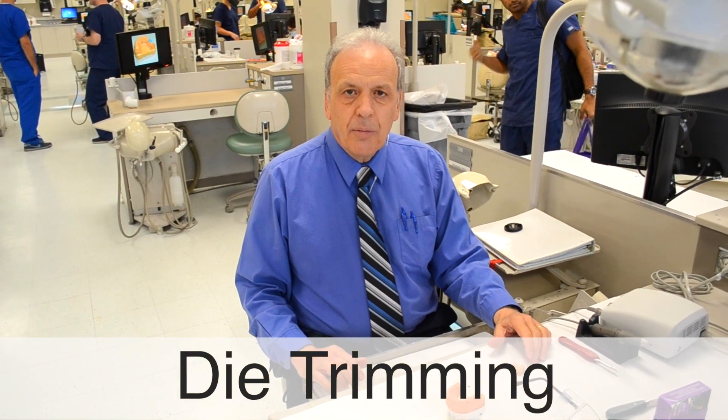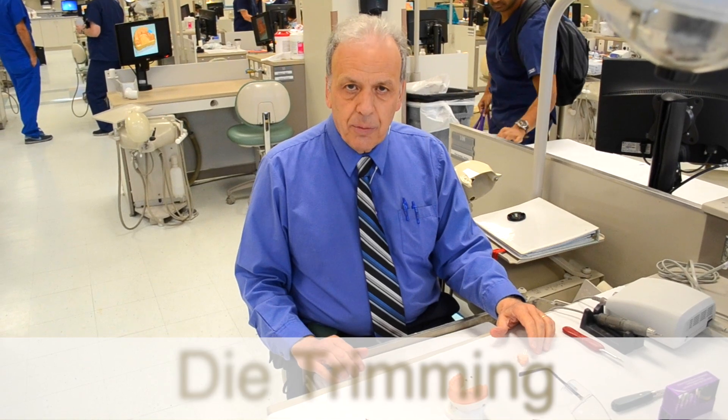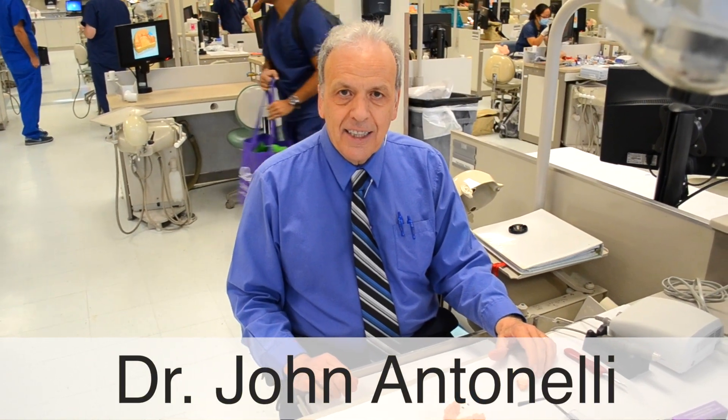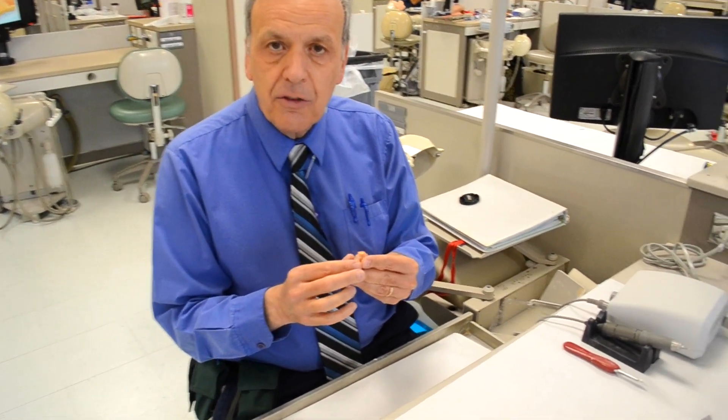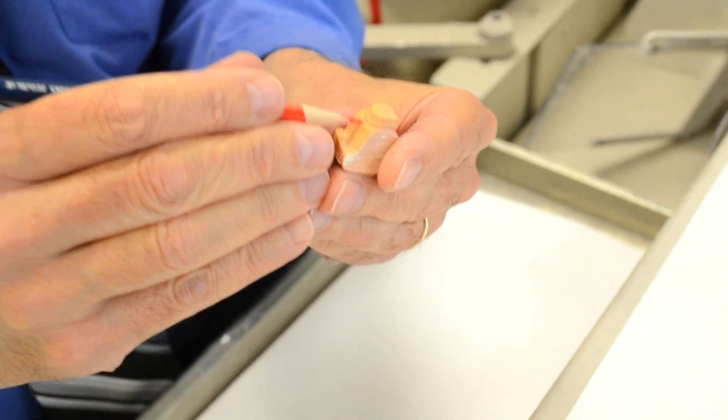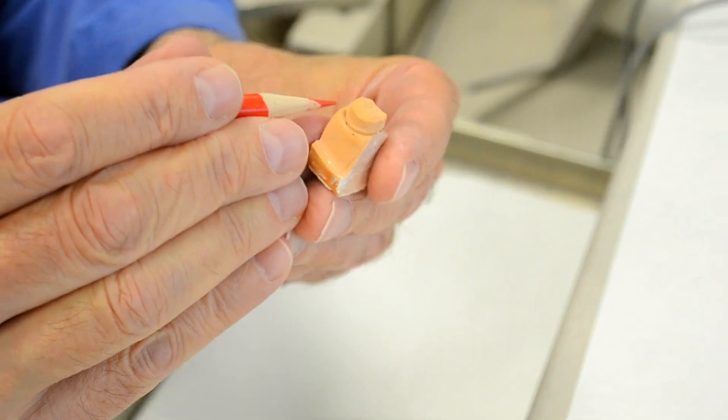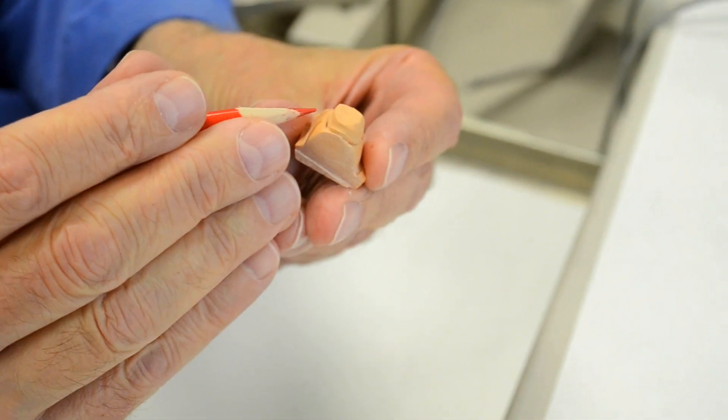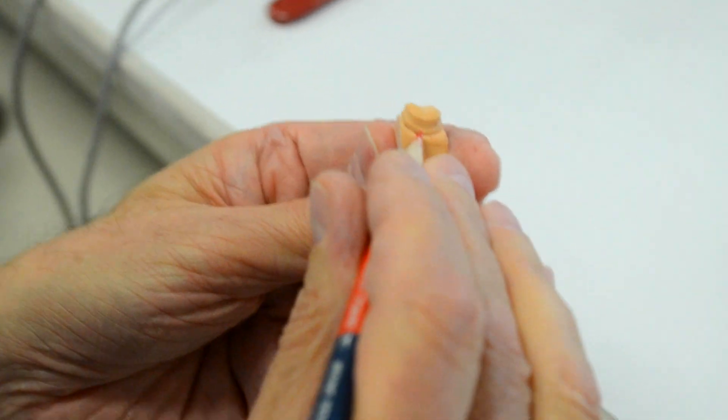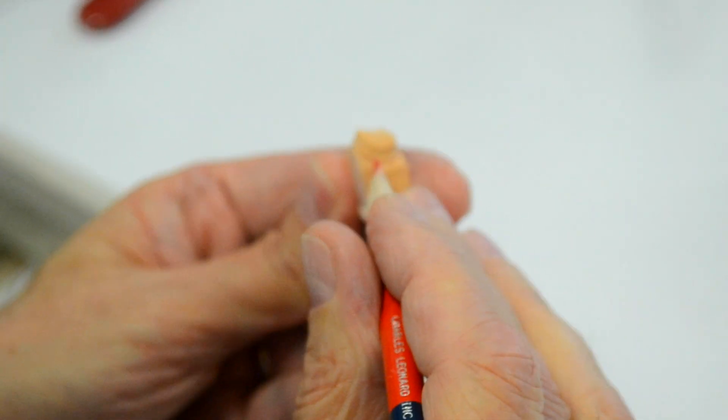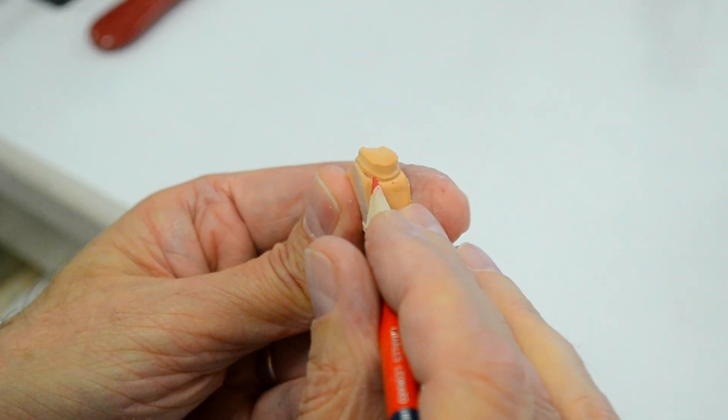Today we're going to perform a procedure known as die trimming. By the way, my name is Dr. John Antonelli, and we are going to perform a procedure entitled die trimming, which is performed on removable dies of master casts for the purpose of removing all of the free gingival margin on the die 360 degrees around the die. By doing so, we uncover the finish line and make the finish line a lot more accessible for waxing perfect margins.